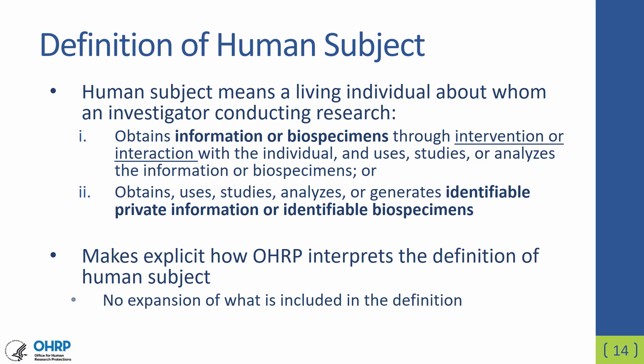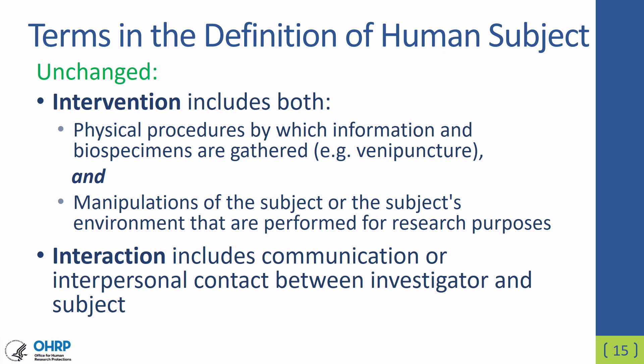Note that investigator can pertain both to a professional or to a student—it's about the activity that's going on. Two terms included in the definition for human subject have definitions that remain unchanged. An intervention can include both physical procedures by which information or biospecimens are gathered—for example, drawing blood—or manipulations of the subject or the subject's environment for the purposes of the research. An interaction is some sort of communication or interpersonal contact between the investigator and the subject.